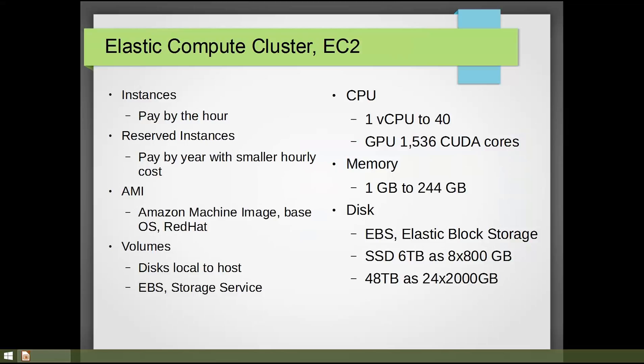This is a breakdown of what EC2 provides in application architecture — your computational host, your application server host. You can define your web service and application service on there. The way they set this up is instances you can pay for by the hour. The lowest-end hosts are about 5 cents an hour, and the larger VPS machines are about $7 per hour — roughly $500 to about $60,000 per year. They've also got reserved instance schemes where if you know you need a certain amount, you can reserve an instance and pay a smaller hourly fee, or buy by the year.